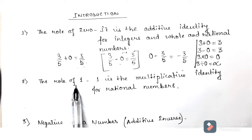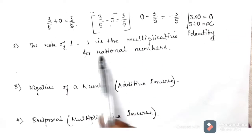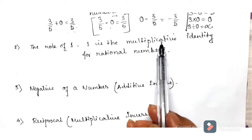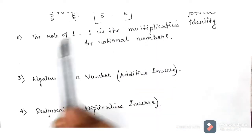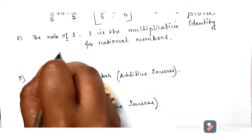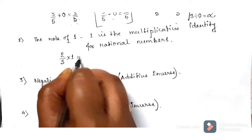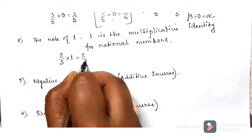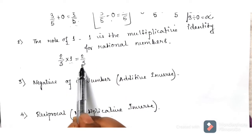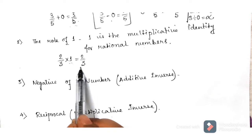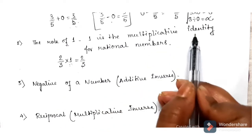The next point: the role of 1. 1 is called the multiplicative identity for rational numbers. What do you mean by multiplicative identity? Multiplicative identity means after multiplication, we get the same number. For example, if I take 2 by 3 and multiply it by 1, we get the same number. That is why 1 is said to be the multiplicative identity.